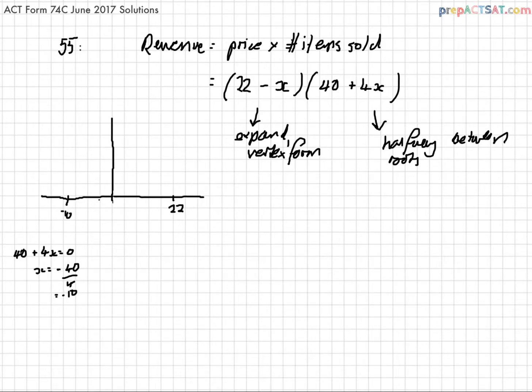The vertex is somewhere in the middle. If the vertex is halfway between the roots, 22 minus negative 10 over 2 gives us 16.